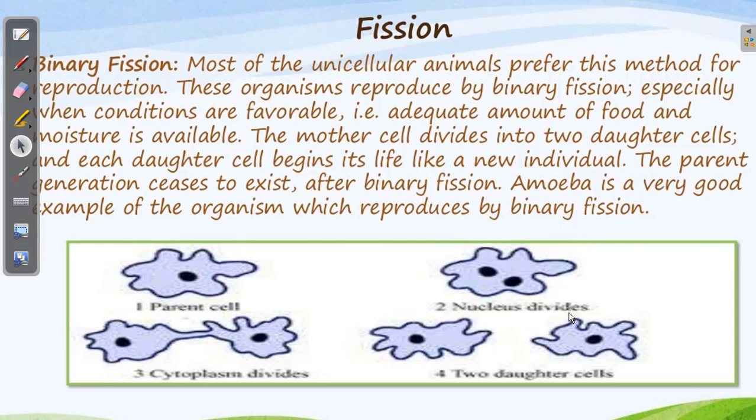The organism does not reproduce every now and then. Two conditions are required: the first is maturation — the organism must reach maturity. The second is that adequate food, temperature, and moisture must be available, meaning favorable conditions. Just as we need food to survive, the same applies to every organism. They can only undergo fission when they reach maturity and when favorable conditions are present.